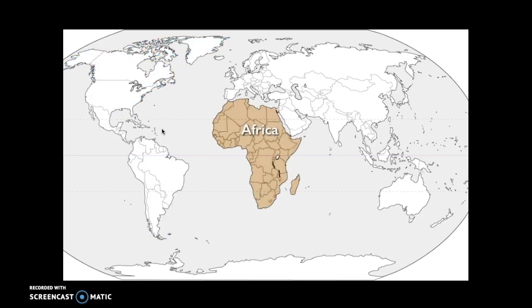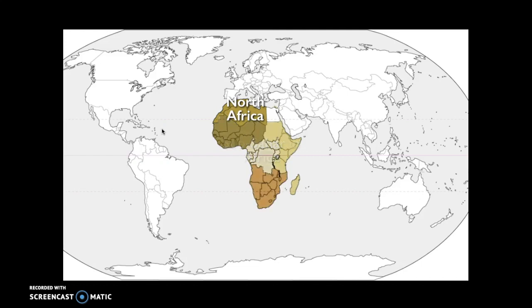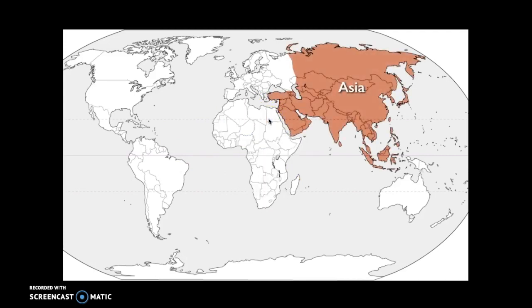Africa can be divided into North Africa and Sub-Saharan Africa, which is the most common division seen on the AP test, although they reserve the right to divide Sub-Saharan Africa further into West Africa, Central Africa, South Africa, and East Africa. Note that Egypt is not included in Sub-Saharan Africa — Egypt is considered part of the Middle East and part of Asia.